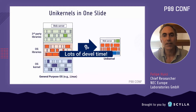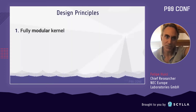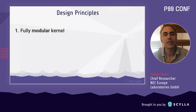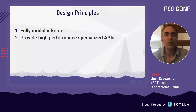In the past, doing this transformation required lots of development time and lots of hand work. So the design principles for Unicraft were: first, to create a fully modular kernel that would be easy to customize and build these software stacks; and second, to provide high-performance specialized APIs to further improve performance.